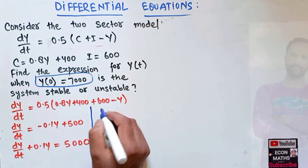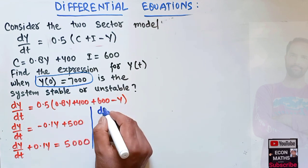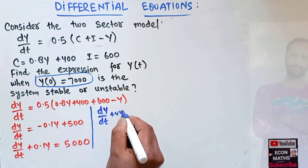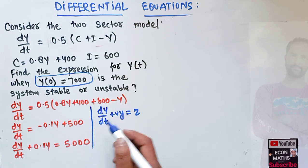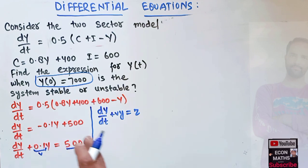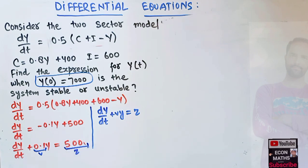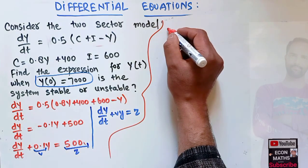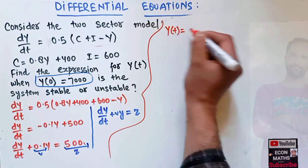This is now in the standard form of a first-order linear differential equation, as seen in the earlier video: dy/dt + vy = z. In our case, v = 0.1 and z = 500. The general solution for this type of equation is given by a standard formula.